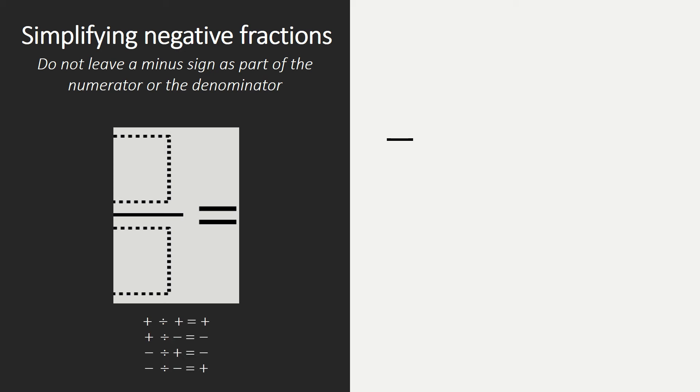The same rules apply as normally. When you divide a positive number by a positive number, you get positive. Positive divided by negative is negative. Negative divided by positive is negative. And negative divided by negative equals positive.